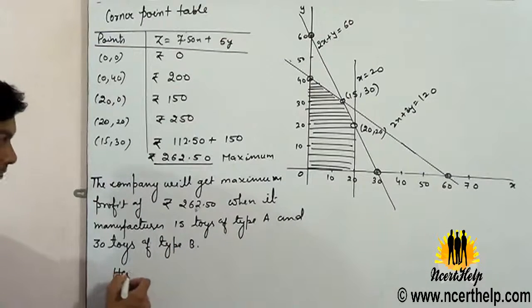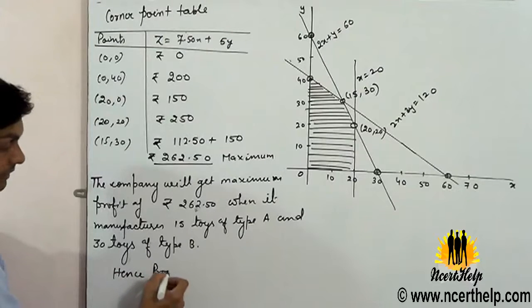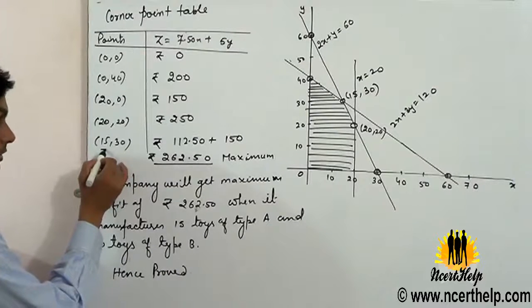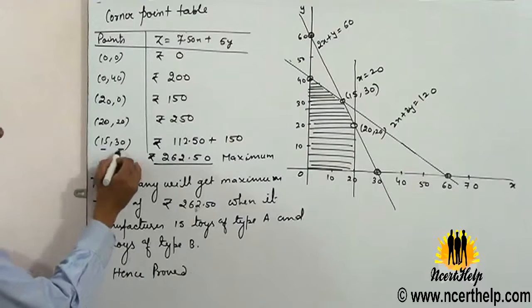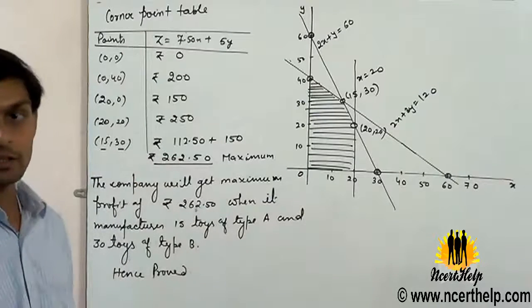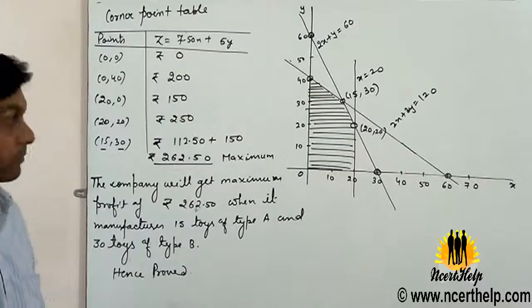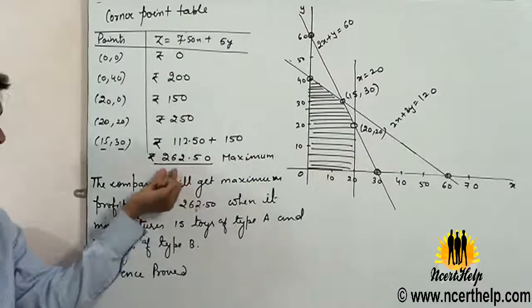As proved, this question was proved. And then we prove that 15 toys of type A and 30 toys of type B gives this company's maximum profit.